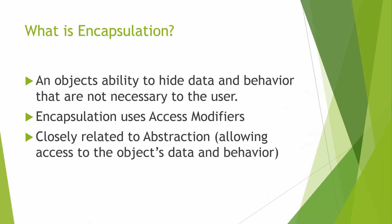What does that mean? It means that if you want to keep variables, properties, methods, functions — anything that you don't want a class, a derived class, or a class that is referencing your class to be able to see — you can use encapsulation. Encapsulation in C-Sharp uses access modifiers. It's very closely related to abstraction, which allows access to objects, data, and behavior.